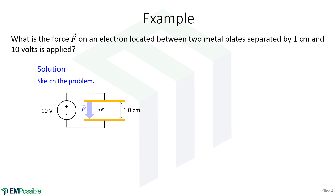So we have a voltage supply of 10 volts applied to these two metal plates shown in gold here. The two plates are separated by a distance of one centimeter. We have an electron somewhere in the middle of these plates. And because we've applied a voltage, we get an electric field between those plates. The electric field will go from the high voltage to the low voltage, so in fact the electric field will be in the negative Z direction if we're defining up and down here as the Z direction.